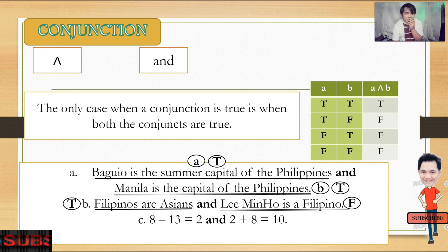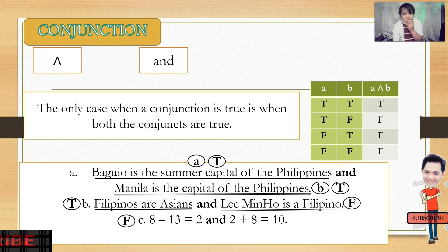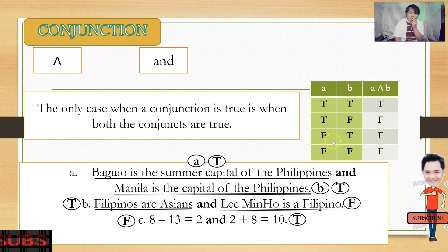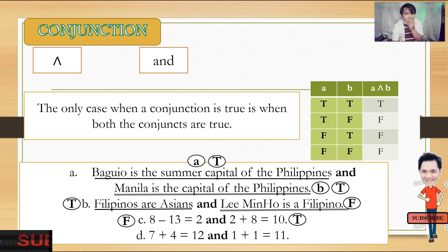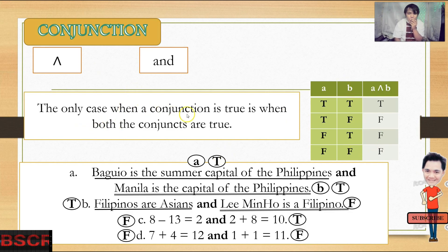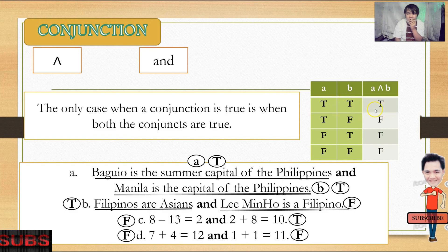Next: '8 minus 13 is equal to 2 and 2 plus 8 is equal to 10.' The first statement is false, the second is true. The combination false and true is still false. Another example: '7 plus 4 is equal to 12 and 1 plus 1 is equal to 11.' A is false and B is false — still false. The only case when a conjunction is true is when both conjuncts are true.